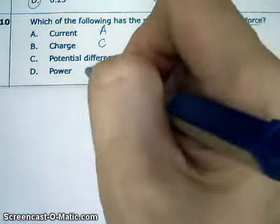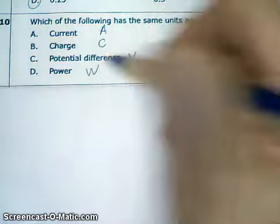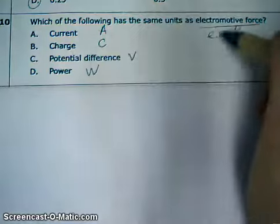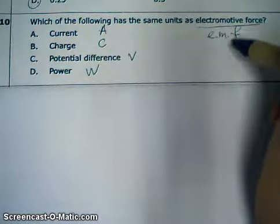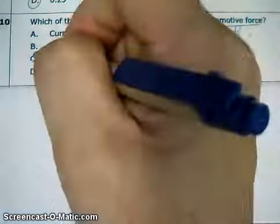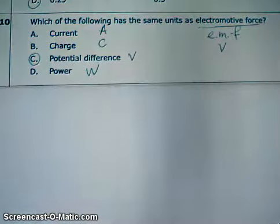Power is watts. EMF has the unit of volts, so the answer is C — potential difference. Simple.